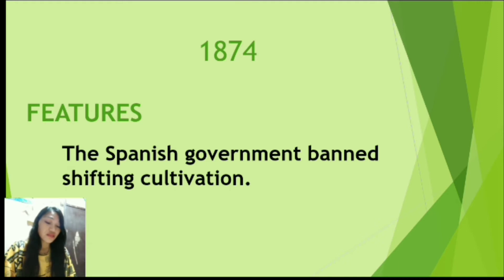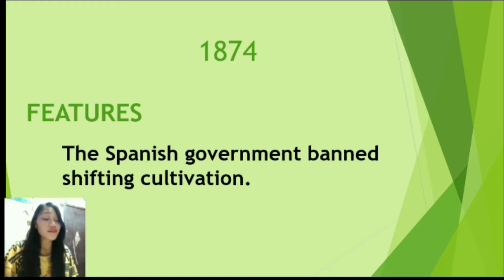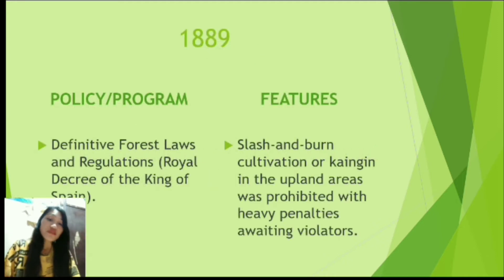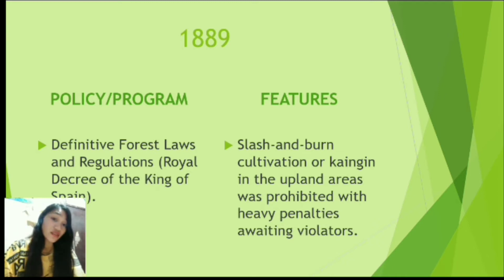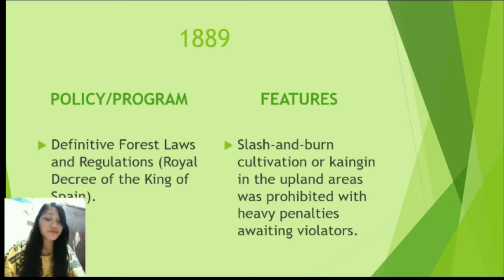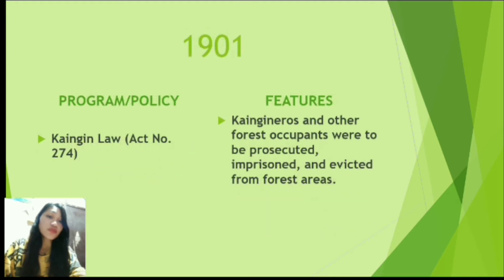Moving on to 1874, the Spanish government banned shifting cultivation because they condemned such practices as harmful to the forest. In 1889, the definitive forest laws and regulations under the royal decree of the King of Spain prohibited slash-and-burn cultivation or kaingin in upland areas, with heavy penalties awaiting violators. Slash-and-burn agriculture is one of the largest contributors to air pollution and is also illegal in the Philippines under the Forestry Reform Code of 1975.